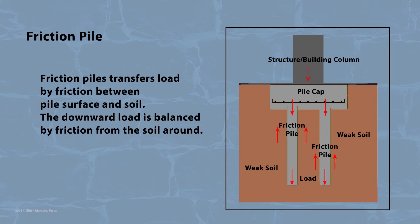Friction piles transfer load by the action of friction between the pile surface and the soil around it. Piles take the load from the column and transfer it in a downward direction. This causes the pile to move downward under the action of load. The downward movement is halted by friction due to the soil surrounding the pile, thus balancing the downward load and movement.